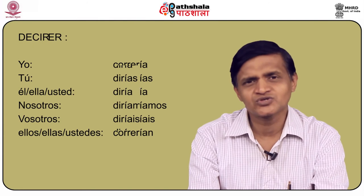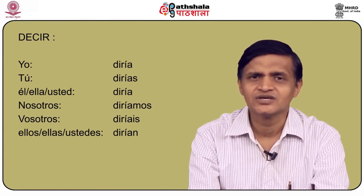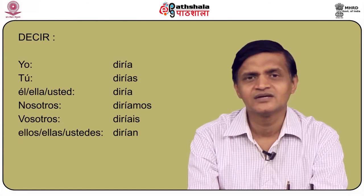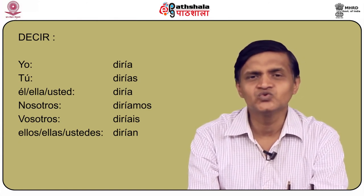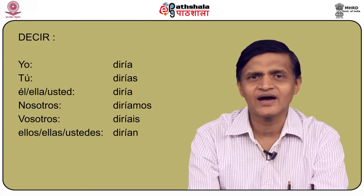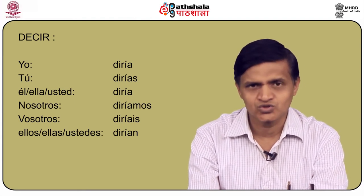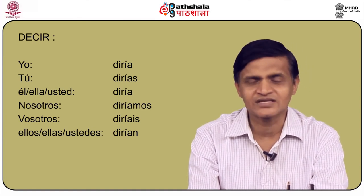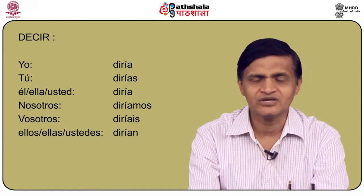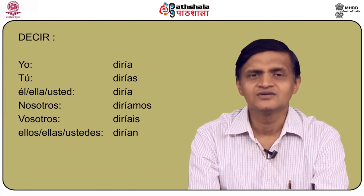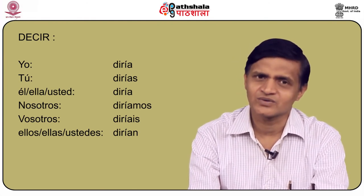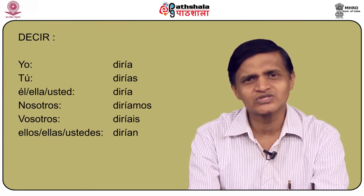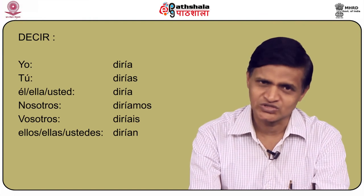How do we conjugate the verb decir in the conditional? We conjugate decir in the conditional as: yo diría, tú dirías, él/ella/usted diría, nosotros diríamos, vosotros diríais, and ellos/ellas/ustedes dirían.